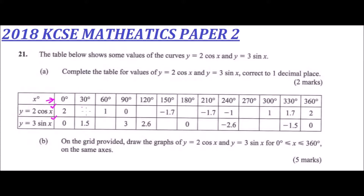That should give you 1.7 using your calculator. Then for x = 120, multiply 2 by cosine of 120 to get minus 1. For x = 180, 2 times cos(180) gives minus 2. For x = 270, 2 multiplied by cos(270) gives 0. That's straightforward using your calculator.